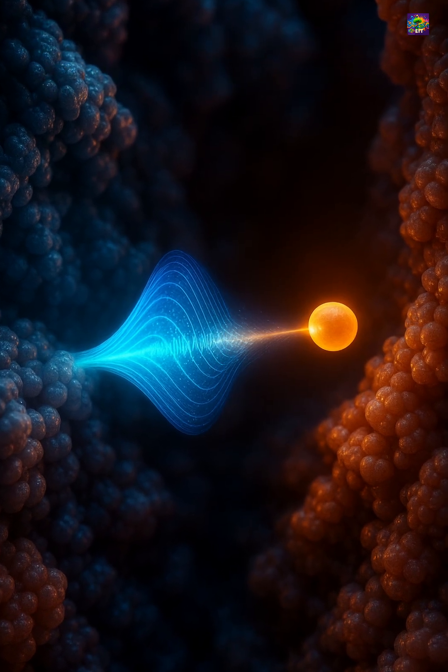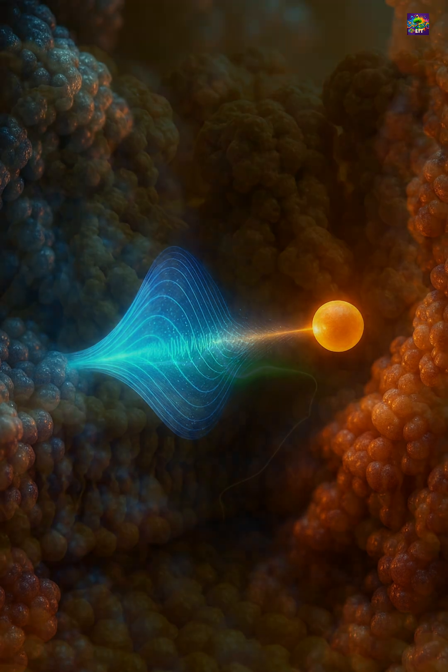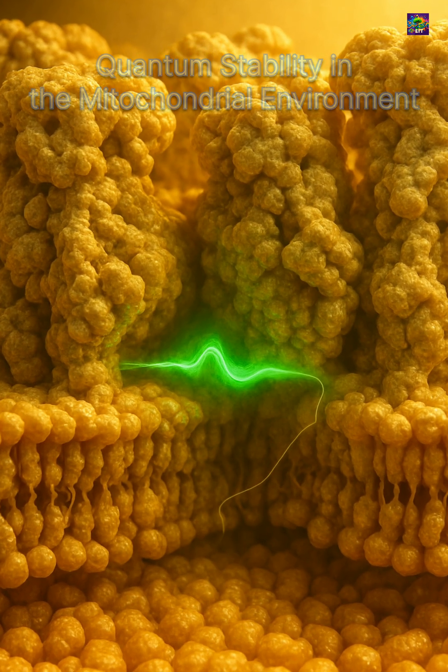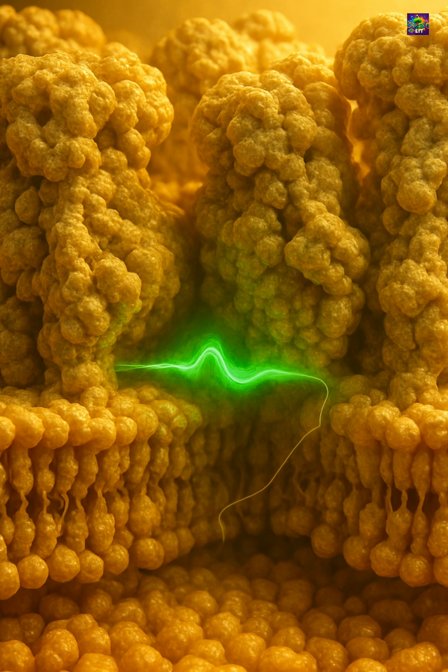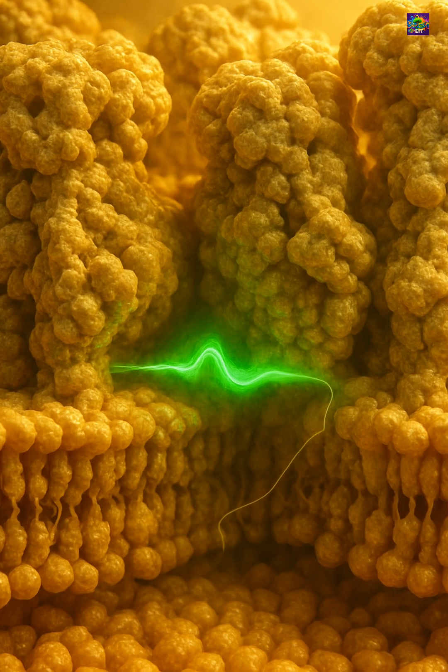Although quantum effects usually fade fast in warm and noisy environments, the tightly packed proteins inside mitochondria keep the electron pathway stable enough for tunneling to happen again and again.